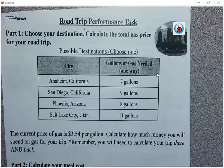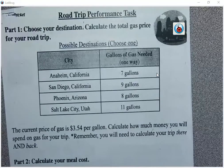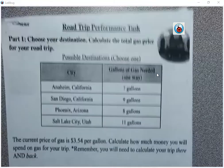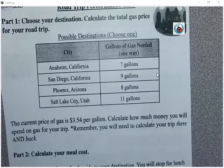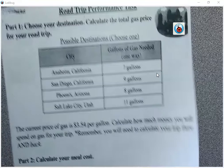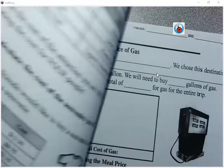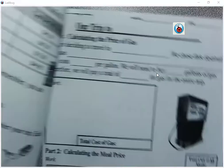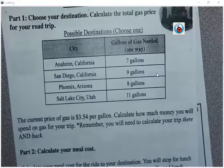All students got a paper like this. It is front and back, two separate sheets. There's part one through part six on the paper.